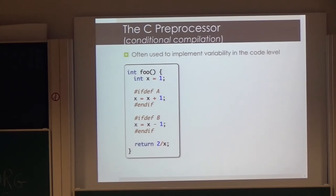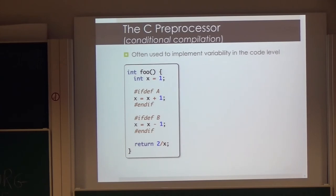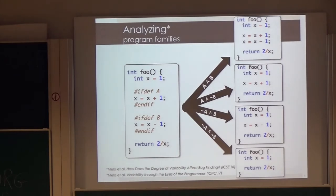As you can see here, we have preprocessor directives like #ifdef and #endif. We have a feature expression — in this case A and B — and then you can either turn on or turn off, include or exclude the code inside the directive. You can easily see that if we assume these features are independent, we can generate different programs: enabling A and B gives one program, enabling only A gives another, only B gives another, and disabling both gives the smallest program. In one particular variant, we have a bug — X will be zero at that point.